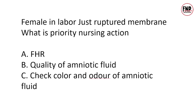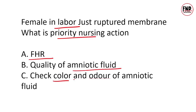Question 2: A female in labor just ruptured membrane — what is the priority nursing action? Labor के दौरान जैसे ही membranes rupture होती है, amniotic fluid बाहर आता है, तो priority nursing action कौन सा होगा? Option A: Check fetal heart rate. Option B: Quality of amniotic fluid checking. Option C: Check color and odor of amniotic fluid. Correct answer is Option A. जैसे ही amniotic sac फटता है, बाहर amniotic fluid निकलते ही हम बच्चे की heart rate assess करते हैं और यह पता करते हैं कि बच्चा distress में तो नहीं है। This is the priority.